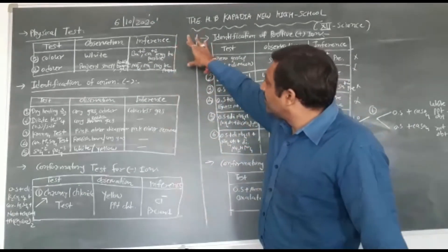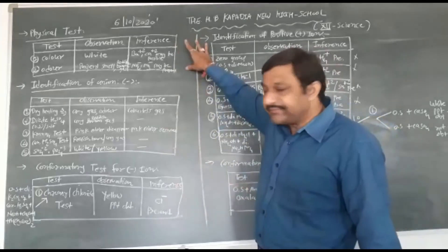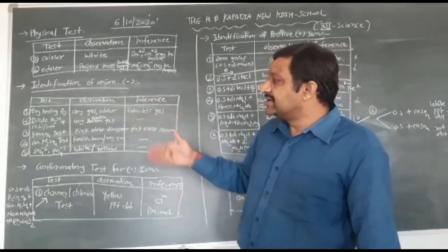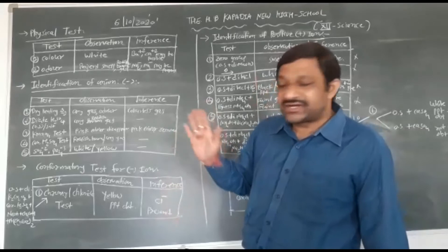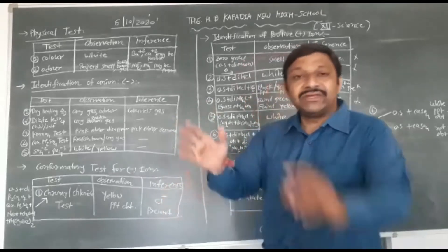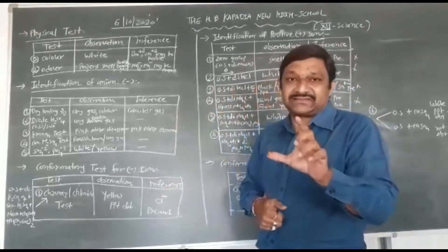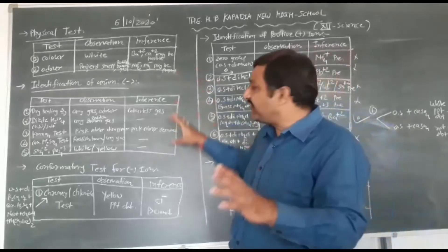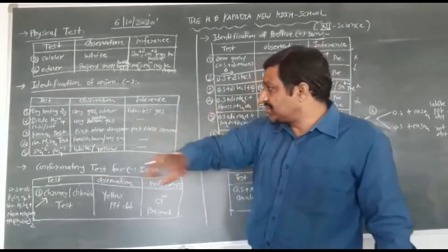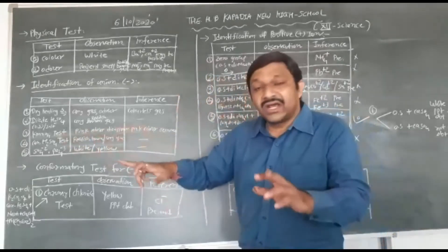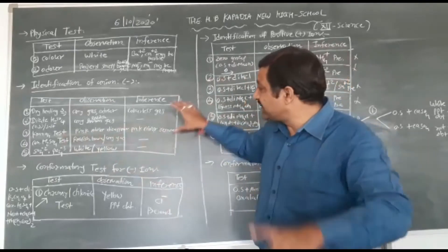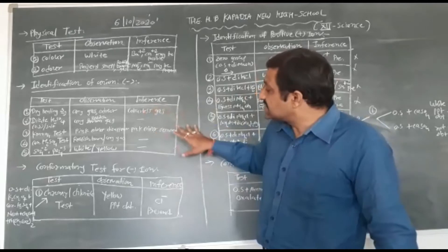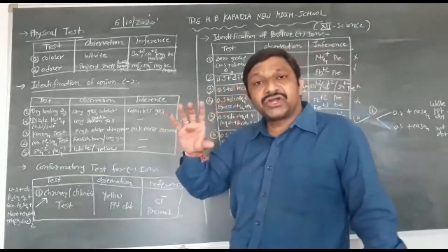In the physical test, you have to observe the chemical — colorless or colored, powder form. Then second, identification of anion. You all know about the dry heating test, dilute sulfuric acid test, KMnO₄ test, and concentrated sulfuric acid test. In calcium chloride, Cl⁻ is present as the anion. When you perform the KMnO₄ test, the pink color disappears, indicating the halogen group is present.